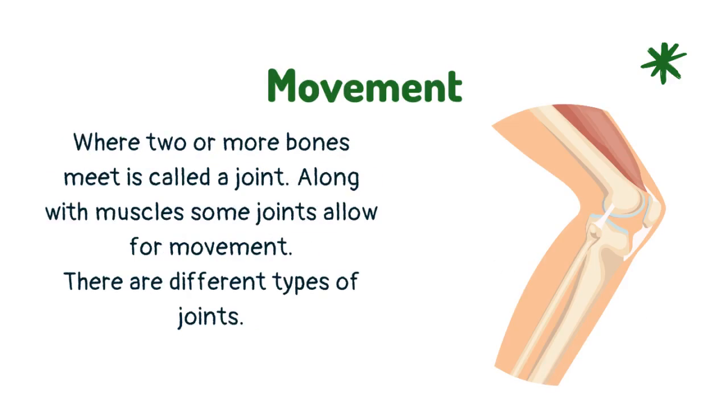Where two or more bones meet is called a joint. Along with muscles, some joints allow for movement. There are different types of joints.